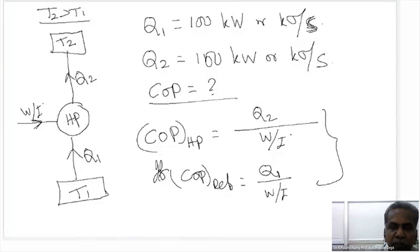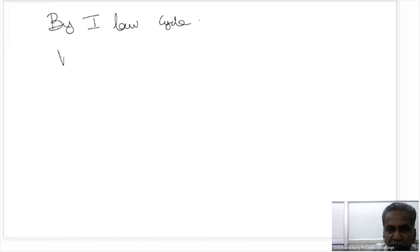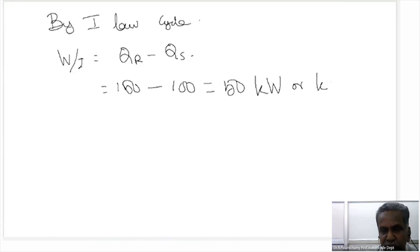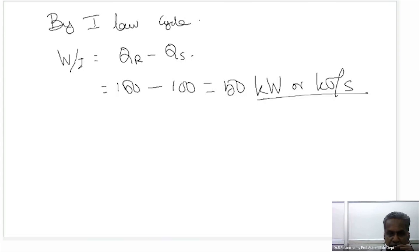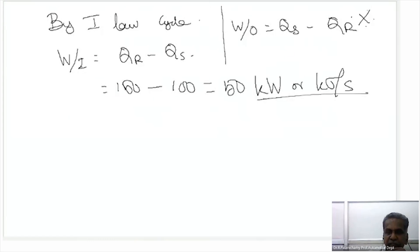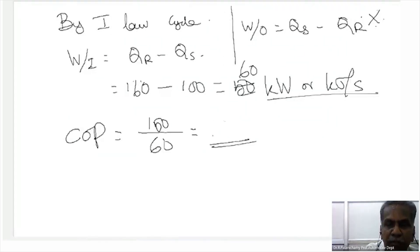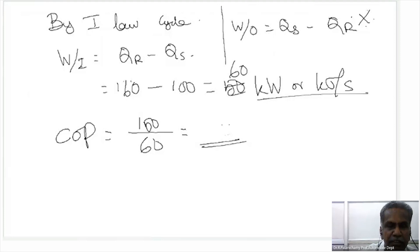Work input by the first law for the cycle equals heat rejected minus heat supplied: Q2 minus Q1, which is 160 minus 100, giving 60 kilowatt. Therefore COP of the heat pump equals Q2 divided by W_input: 160 divided by 60, which equals 2.67.